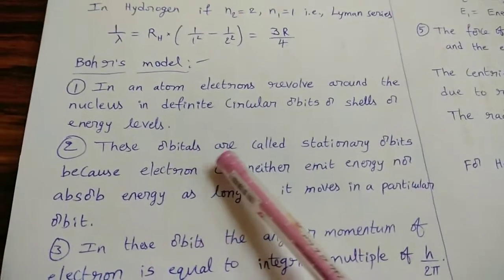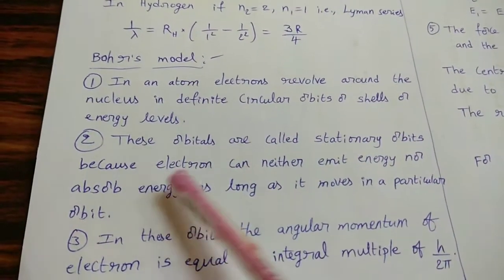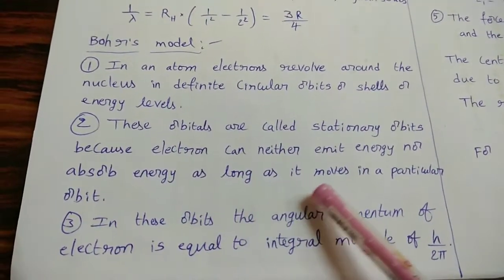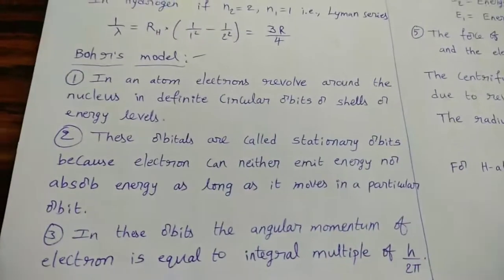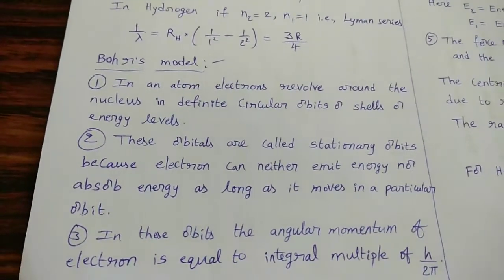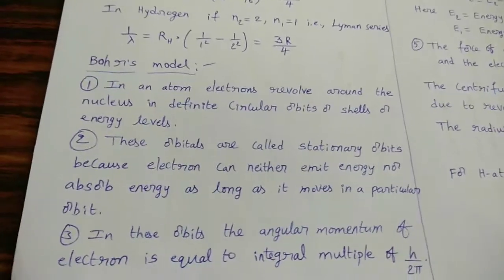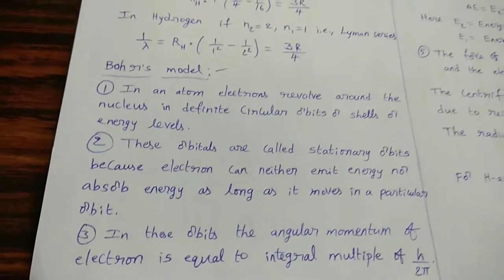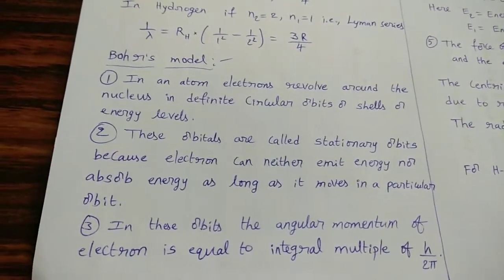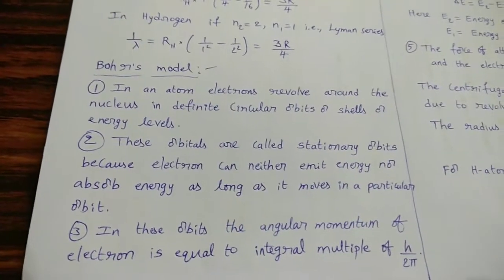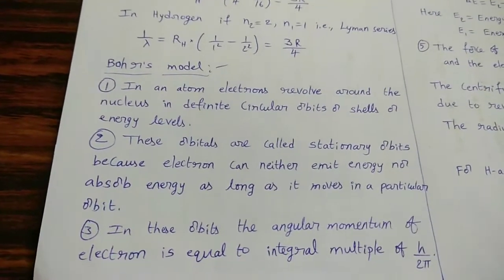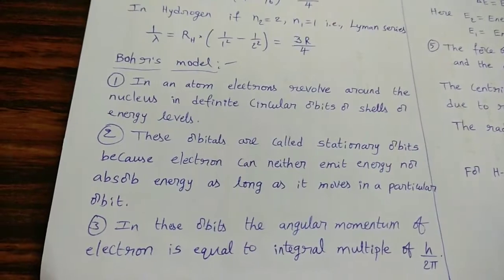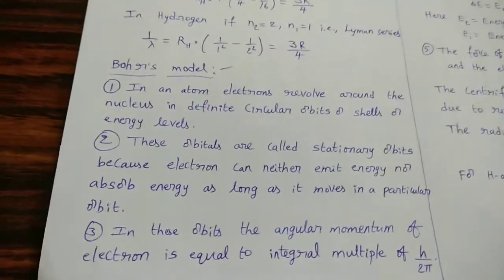These orbits are called stationary orbits because the electron can neither emit nor absorb energy as long as it moves in a particular orbit. If an electron is in the second orbit, its energy remains constant as long as it stays there — it cannot emit or absorb energy. So the energy of these orbits is constant, which is why they are called stationary orbits or stationary shells.